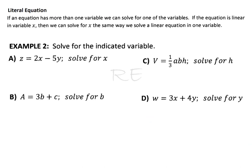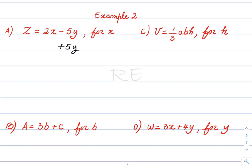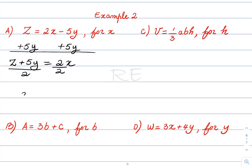A literal equation is an equation with more than one variable. When we solve it, we solve for a variable in terms of the other variables. To solve for x, we add 5y to both sides, giving z plus 5y equal to 2x. Then we divide both sides by 2, so x is equal to (z plus 5y) divided by 2.